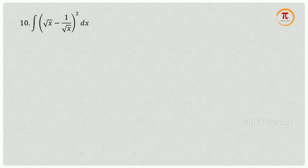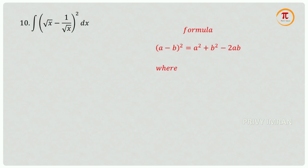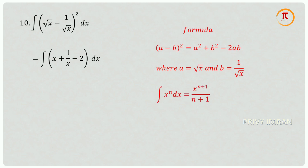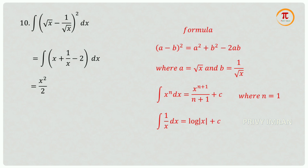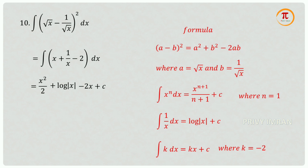Question number 10: integration of (root x minus 1 by root x) whole squared dx. Expanding using the (a minus b) squared formula — a squared plus b squared minus 2ab — where a equals root x and b equals 1 by root x, the modified question becomes integration of x plus 1 by x minus 2 dx. Using the power formula where n equals 1, the first term is x squared divided by 2. Using integration of 1 by x dx equals log mod x plus c, and integration of k dx where k equals minus 2, the required answer is x squared divided by 2 plus log mod x minus 2x plus c.